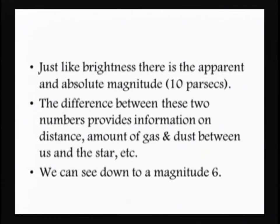Everything is placed at the same distance in our minds. Then looking at apparent brightness gives a feel for where those stars actually are. The differences between absolute and apparent magnitude give information on distance, dust, and gas.